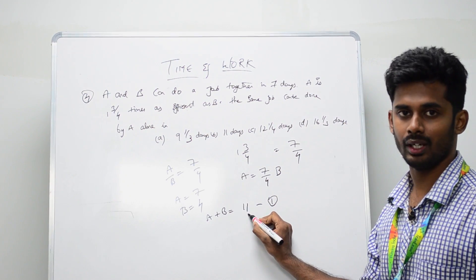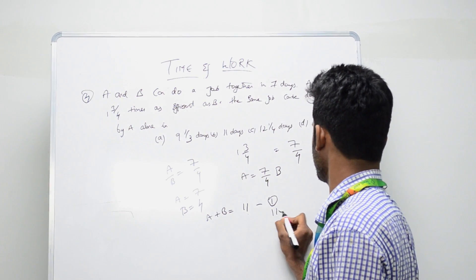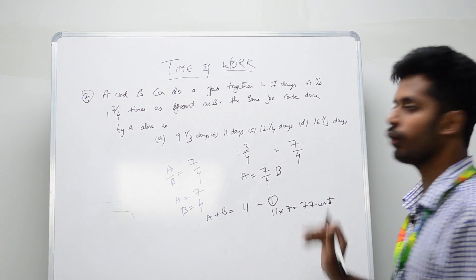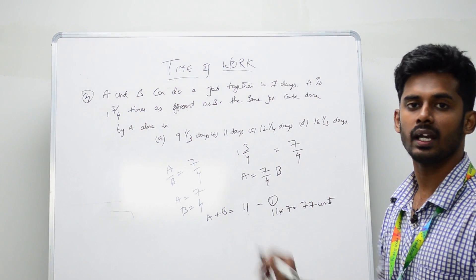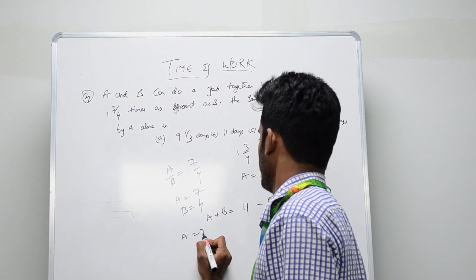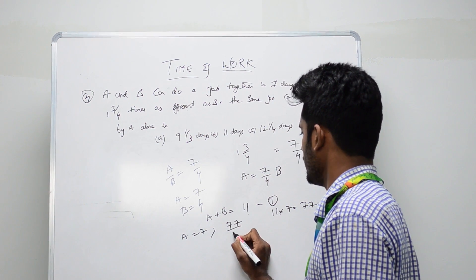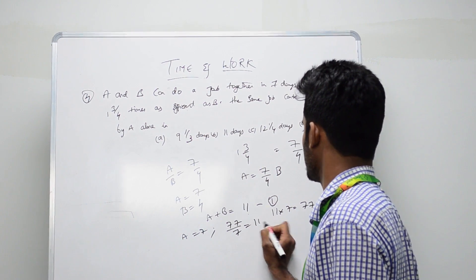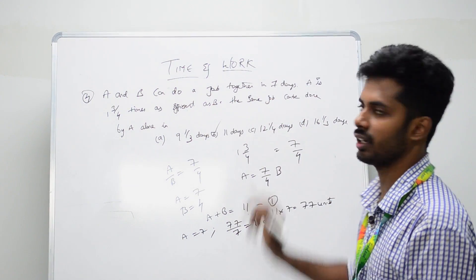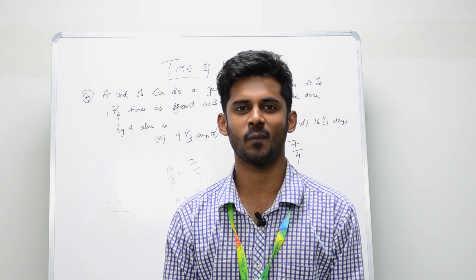In 7 days together they do 11 times 7, which is 77 total units. Since the overall work is 77 units and A contributes 7 out of every 11 units, A alone would take 77 divided by 7, which is 11 days. So option B, 11 days, is correct. If you like the video, please subscribe to our channel — thank you so much!